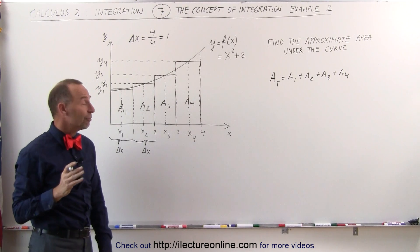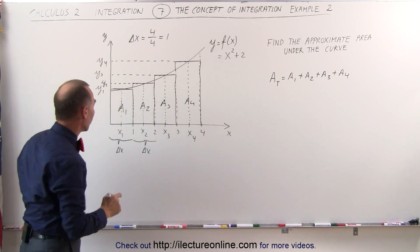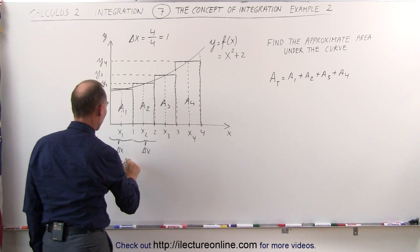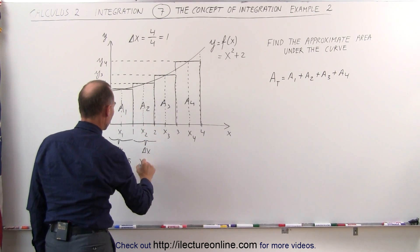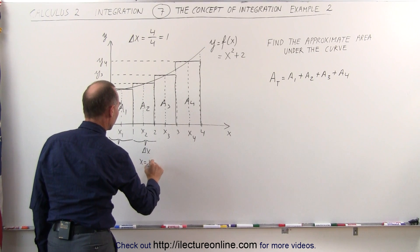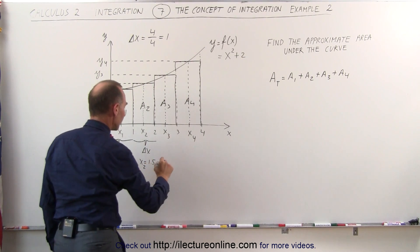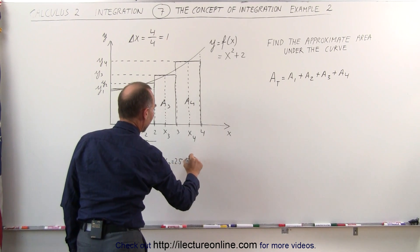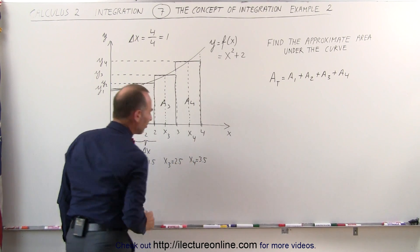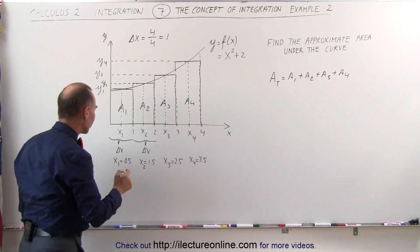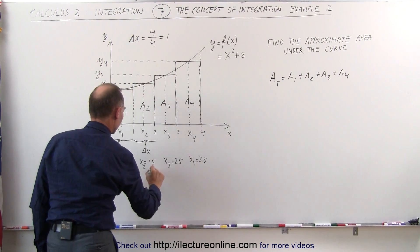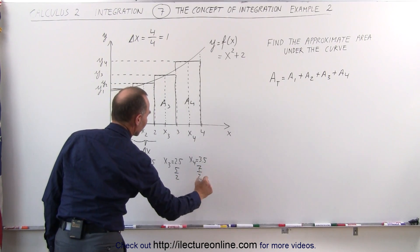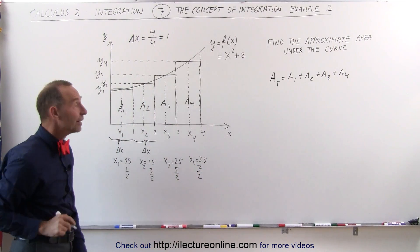We now just have to find the values for x1, x2, x3, and x4. You can see here that x1 should be equal to 0.5. x2 will be equal to 1.5. x3 will be equal to 2.5, and x4 will be equal to 3.5. Sometimes it's just easier to write as a fraction, so this would be 1/2, 3/2, 5/2, and 7/2. Let's go ahead and find the areas now.